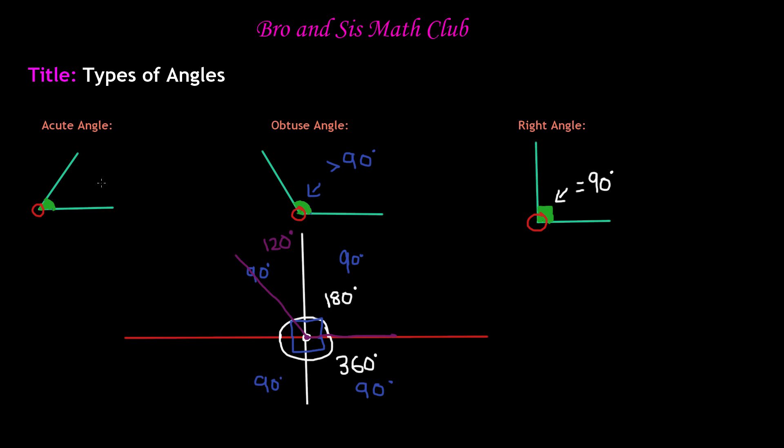So one way you can remember this is when you hear the word acute angle, you can think of little. So acute, cute, little, I guess makes sense because acute angle is small, and it is therefore less than 90 degrees.